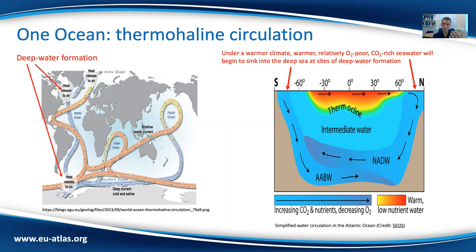That heat released to the air modulates the climate across Northern Europe. As that water cools, it becomes denser, it sinks, it overturns, and the counter currents flow south.